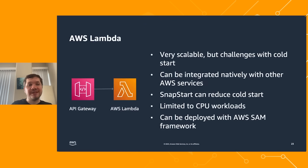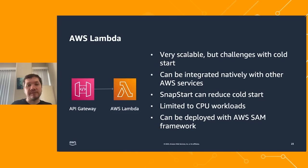AWS Lambda is very scalable but has challenges with cold start. It can be integrated natively with other AWS services, but it's limited to CPU workloads only. There is an option with SnapStart which can reduce cold start. Lambda and other infrastructure can be deployed with AWS SAM framework, which is focused on serverless workloads on AWS.